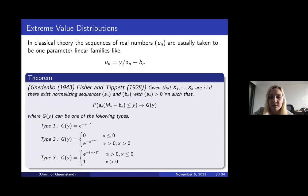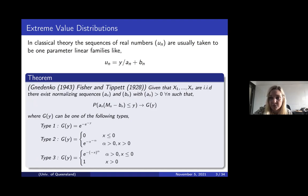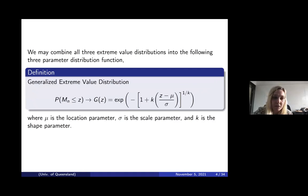In classical theory, the sequences of real numbers un are usually taken to be one-parameter linear families that look like un equals y over an plus bn. In this setting we have a theorem by Ndenko in 1943, with previous work from Fisher and Tippett in 1928. Given x1 through xn iid, there exist normalizing sequences an and bn with an positive such that the probability of the normalized maxima converges to one of three types of distribution. All three types can be unified into a single three-parameter function called the generalized extreme value (GEV) distribution, with location parameter mu, scale parameter sigma, and shape parameter k.